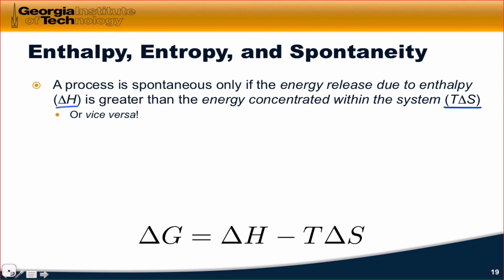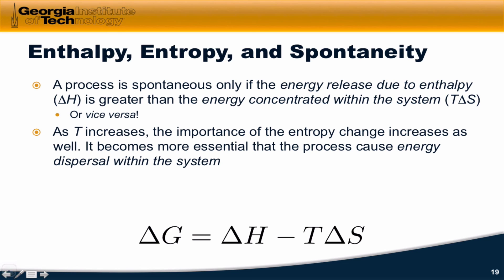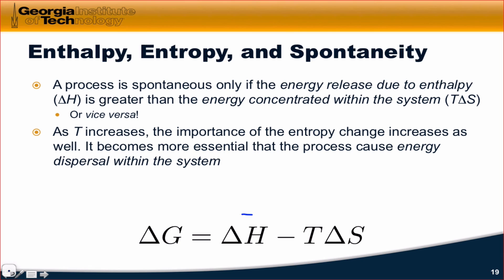Ultimately, a process is spontaneous only if the energy released due to enthalpy, delta H, is greater than the energy concentrated within the system, T delta S — or vice versa, if delta H is greater than zero, that energy absorption must be less than the energy dispersed within the system. As temperature increases, the importance of the entropy change increases as well; it becomes more essential that the process cause energy dispersal and that delta S be greater than zero. At higher temperatures, entropy change is more important to the spontaneity of a chemical process.